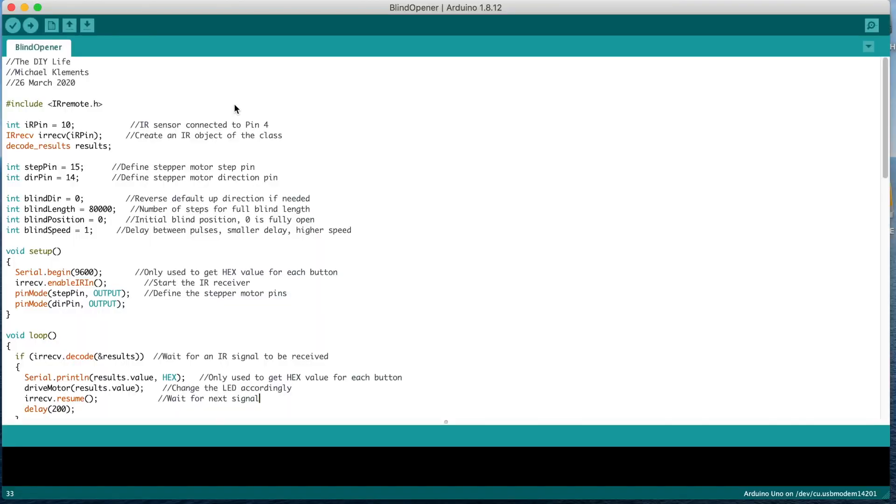The code makes use of the IR remote library for the infrared sensor inputs, creating an infrared object with pin 10 as the sensor's input pin. The stepper motor driver is connected to pins 14 and 15 to control the direction and provide the pulse signals.